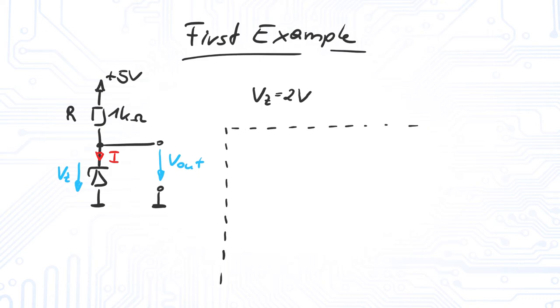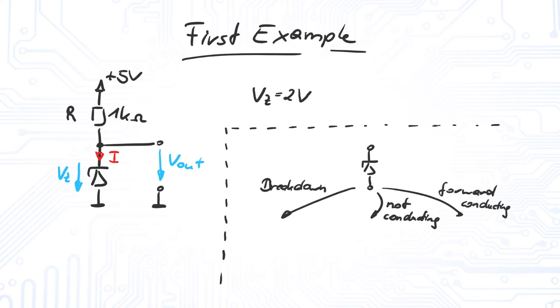Now we have to assume if the Zener diode is either in breakdown, not conducting, or forward conducting. In breakdown, we replace the Zener diode with a voltage source Vz. For not conducting, we replace the Zener diode by an open. For forward conducting, we replace the Zener diode with a voltage source Vz.